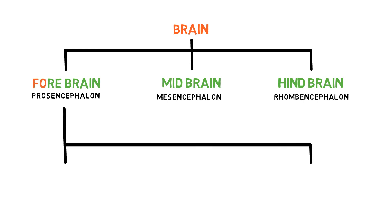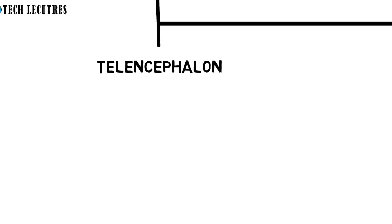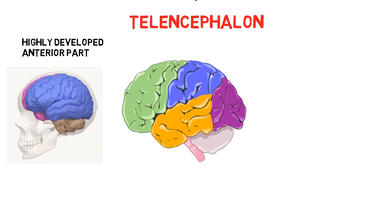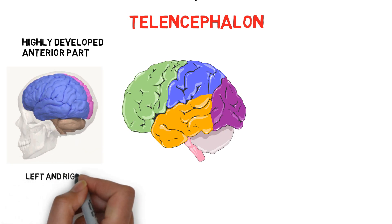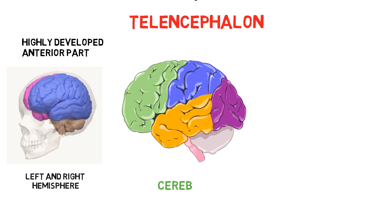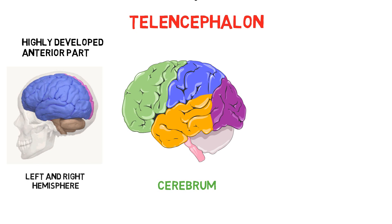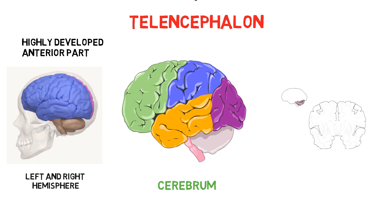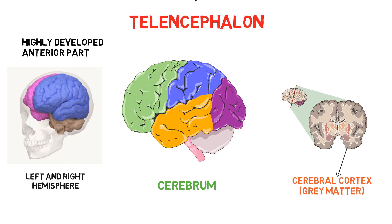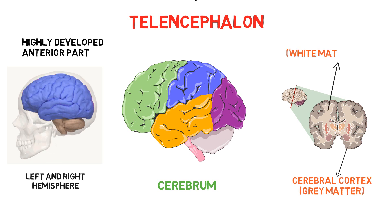Forebrain is divided into two parts: the telencephalon and the diencephalon. The telencephalon is the highly developed anterior part of the forebrain consisting of cerebral hemispheres. The largest part of the human brain is the cerebrum, which is divided into two hemispheres.